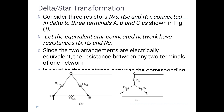Now we have three resistors in the delta network: RAB, RBC, and RCA — this is Figure 1. We will use these to derive the equivalent star-connected network with resistors RA, RB, and RC. The resistance between any two terminals of one network must be equivalent to the other network.